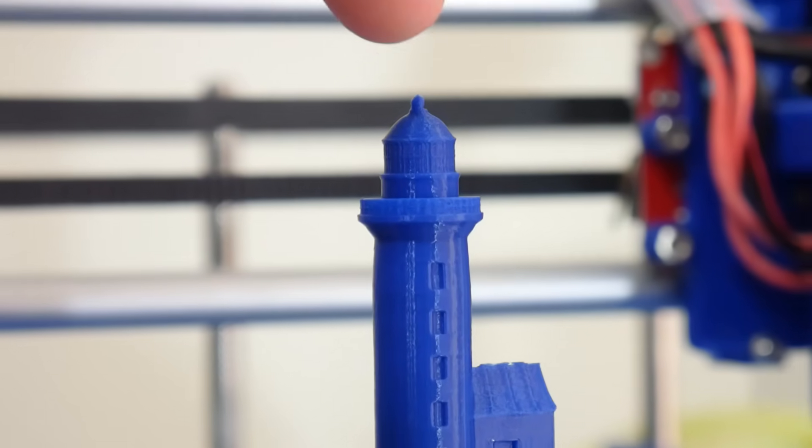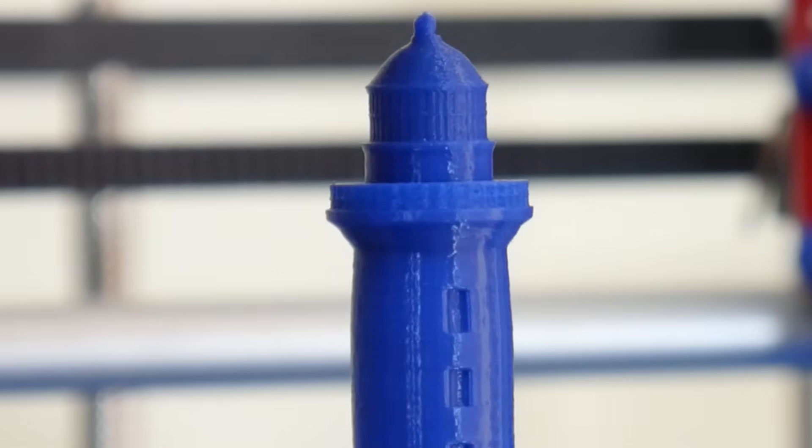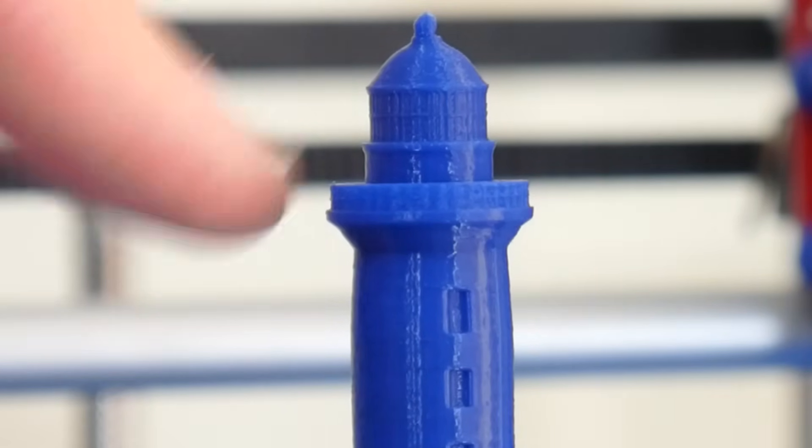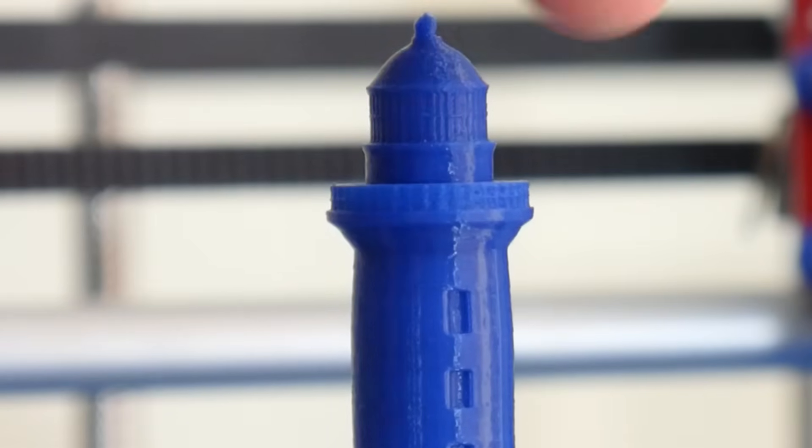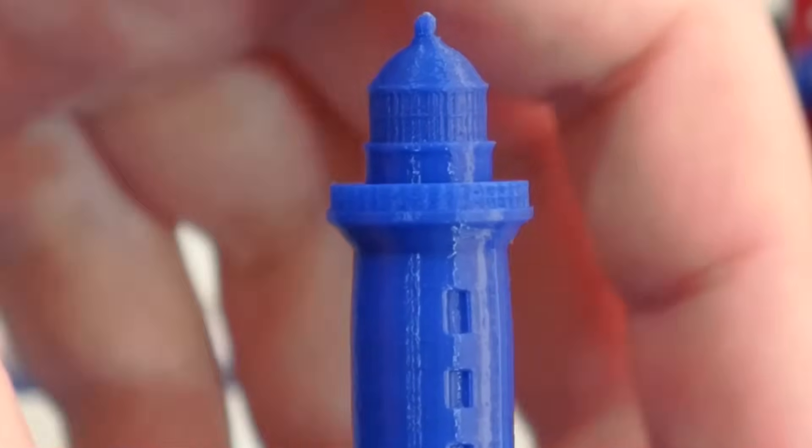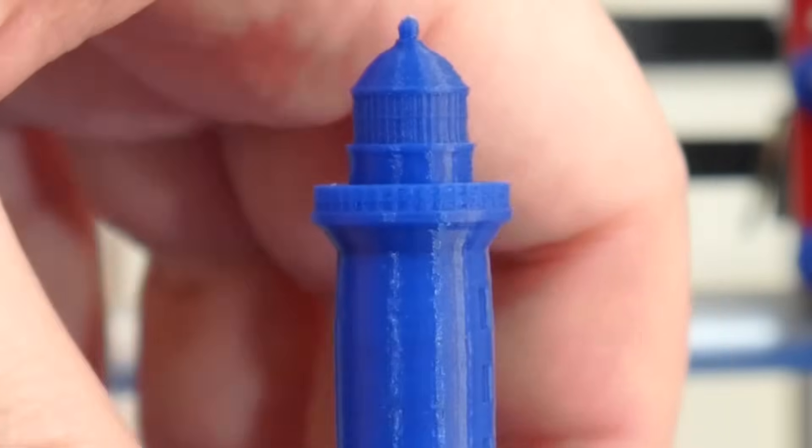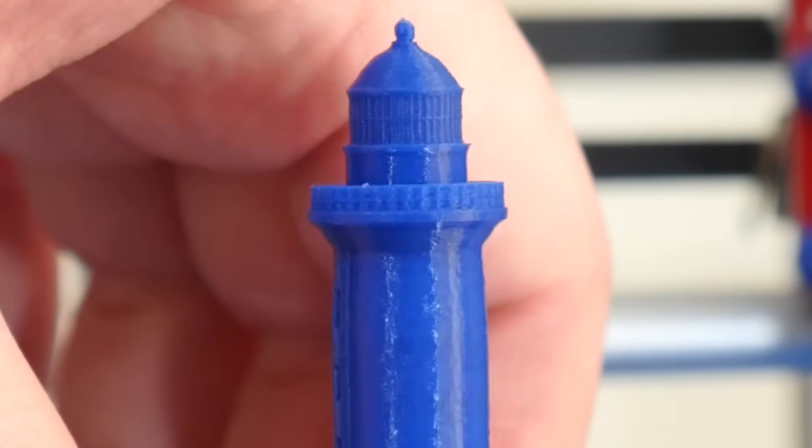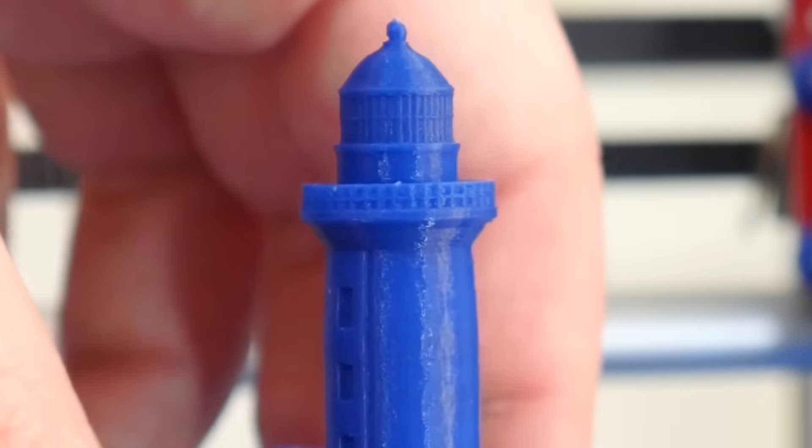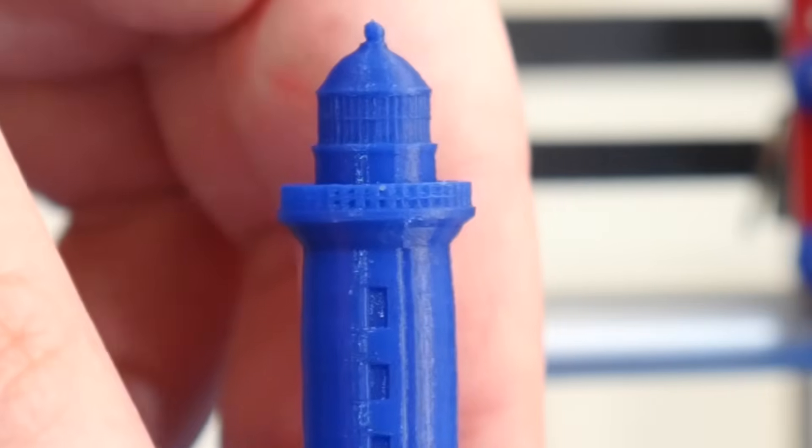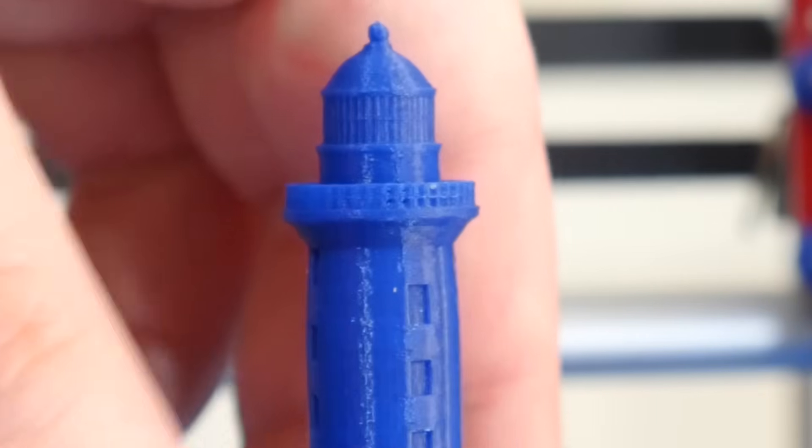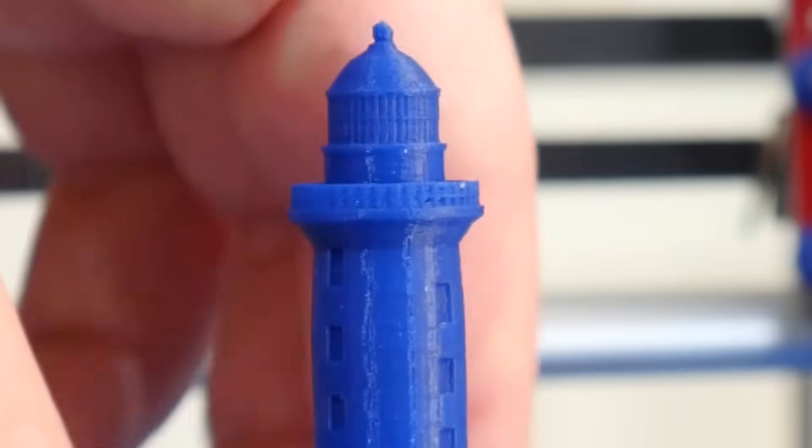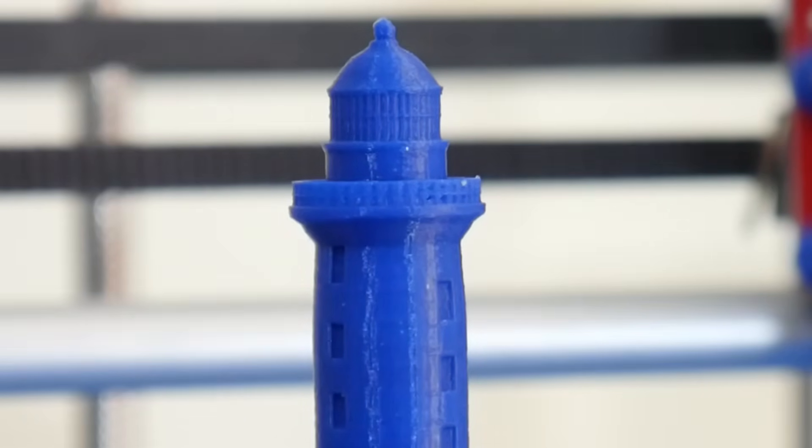But you can see at the top of the lighthouse, you might be able to see the window vanes circling the glass where the light would shine out, and also the railing around the balcony of this lighthouse - you can see the handrail and so on. It's absolutely beautiful. I wasn't expecting it to come out actually, because I've got a 0.4 millimeter nozzle on the E3D hotend. I was expecting a smaller nozzle would produce all that detail, but no, it actually came out in the print.